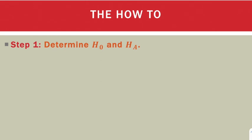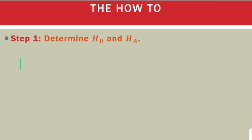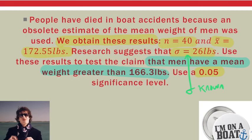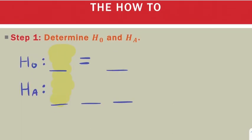So step one is to determine the null and alternative hypotheses. I'm going to start by writing these out. So each one of the hypotheses is going to have three parts. The middle of the null hypothesis is always equal to. The left part of each hypothesis is going to depend on what parameter we're talking about. Well, our claim talks about the mean. So that means this problem is talking about mu.